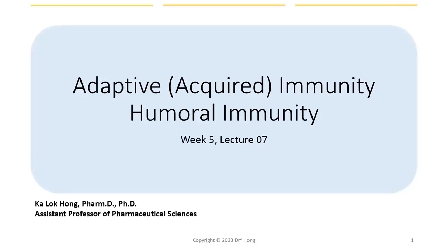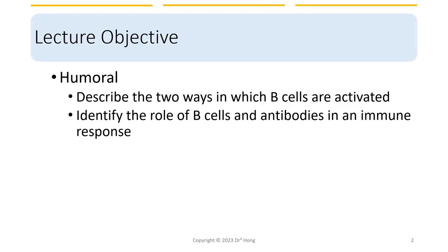Welcome back to the immunology series. In this seventh lecture, we are going to look at humoral immunity. Specifically, we're going to look at the two different ways in which B cells are activated, and also look at the roles of B cells and antibodies in an immune response.